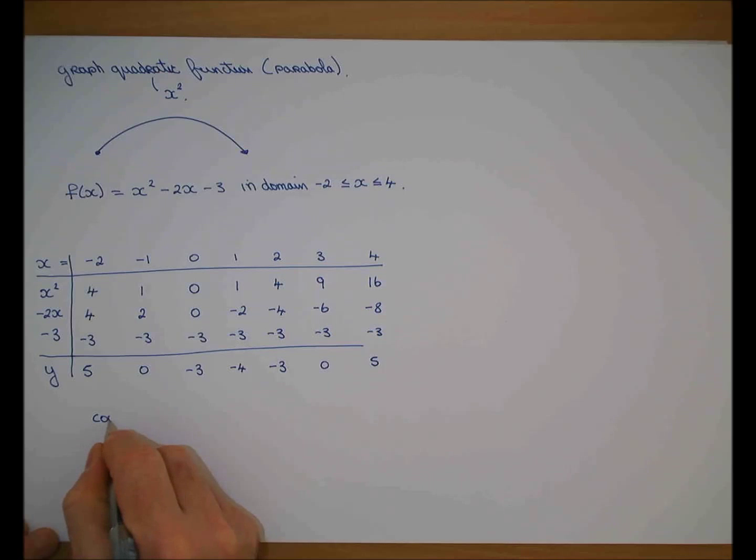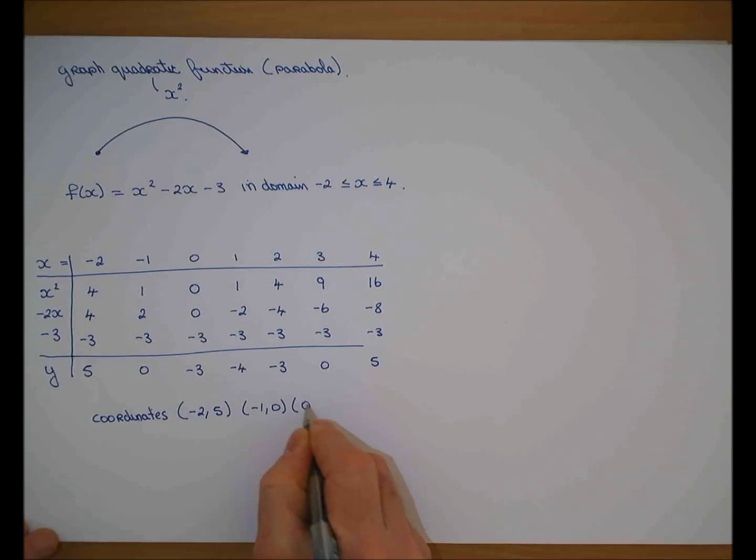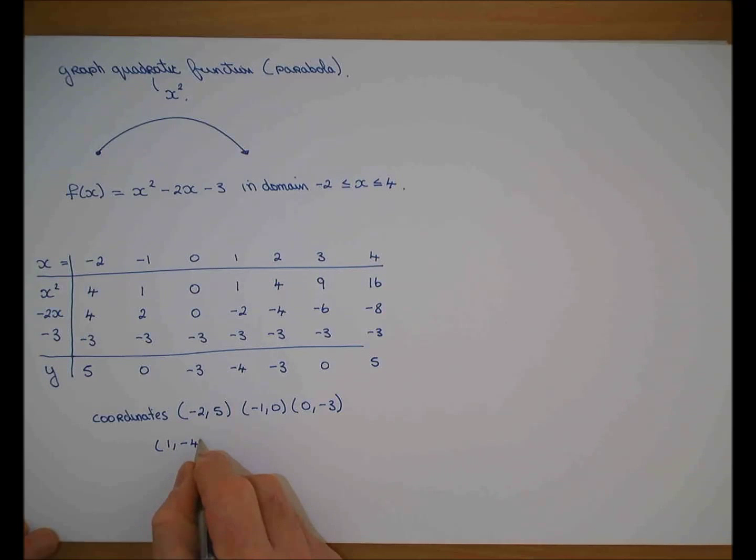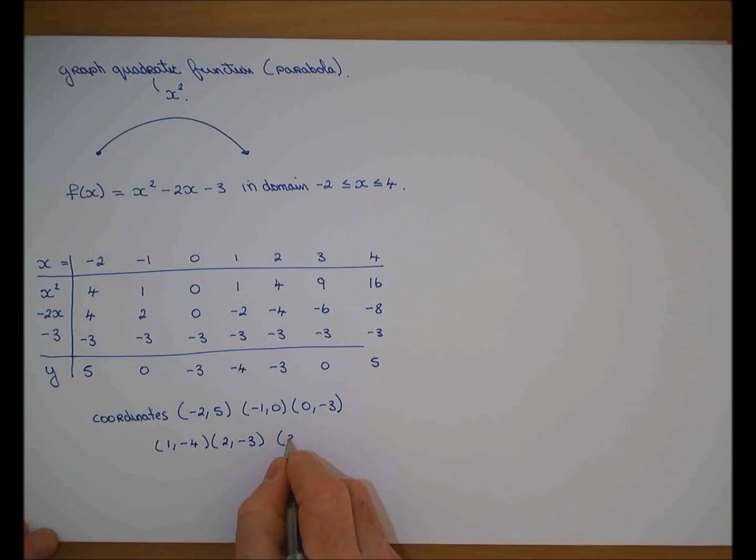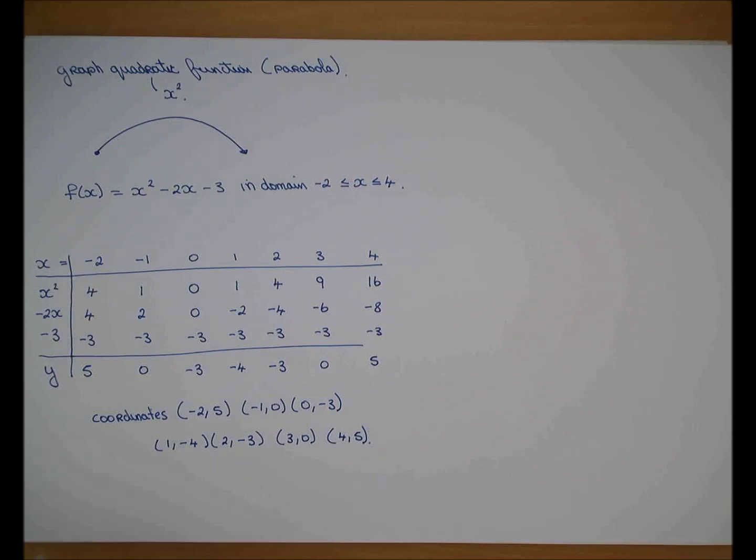So now I have a set of coordinates or points. My first coordinate is minus 2, 5. My next coordinate is minus 1, 0. My next coordinate is 0, minus 3. My next is 1, minus 4. My next is 2, minus 3. My next is 3, 0. My last coordinate is 4, 5.